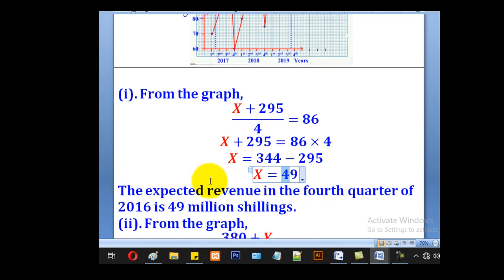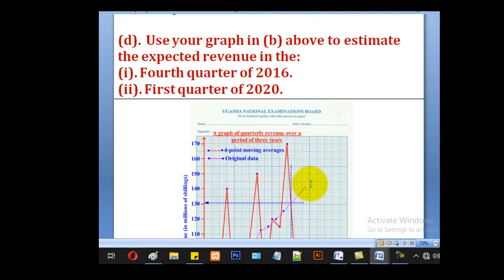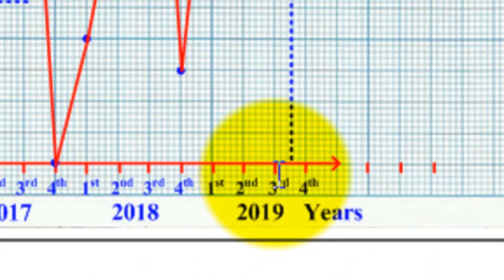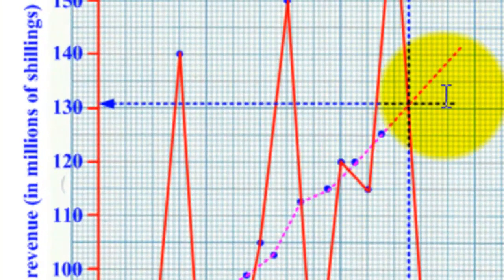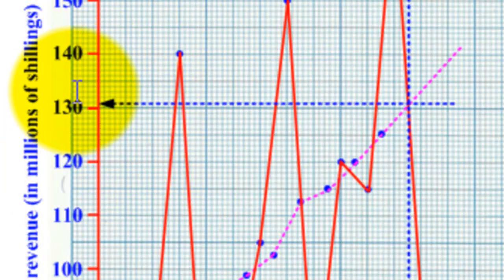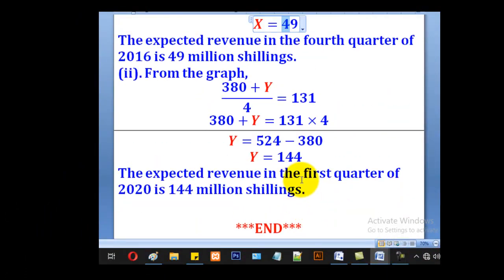We shall do the same for the first quarter of 2020. It will be between third and fourth. Take your vertical line upwards to meet the trend line. Take this side to meet the vertical axis. Read off that value. That value will be equated to the one in the table, which is 380 plus Y over 4. Then we make Y the subject which is 144.